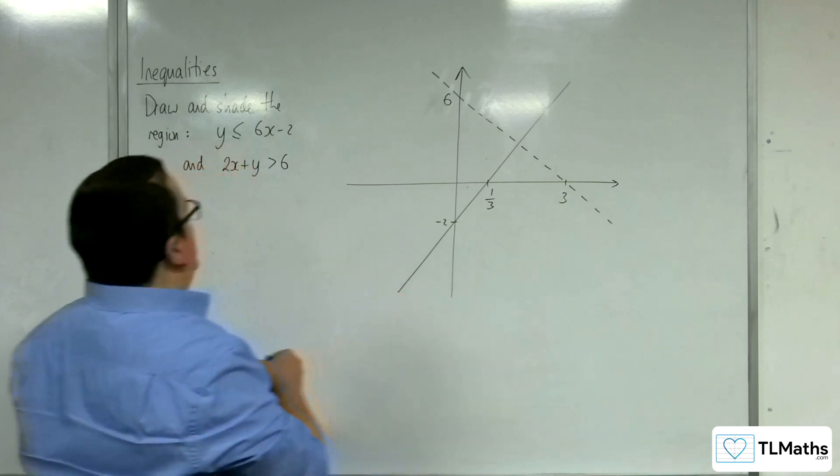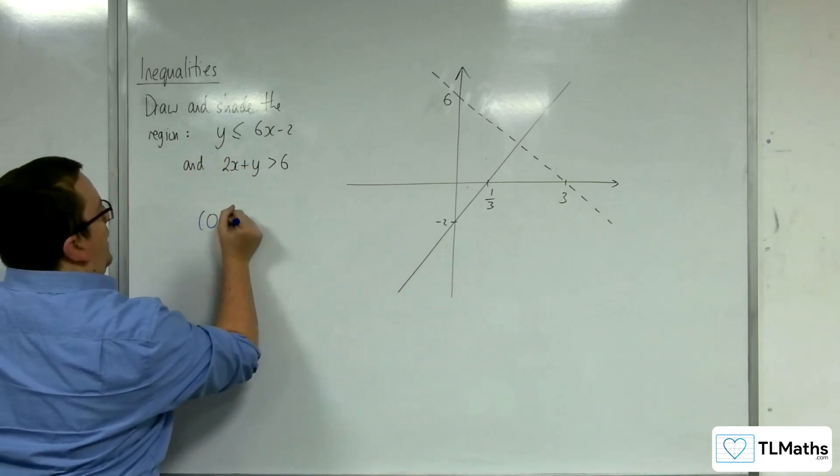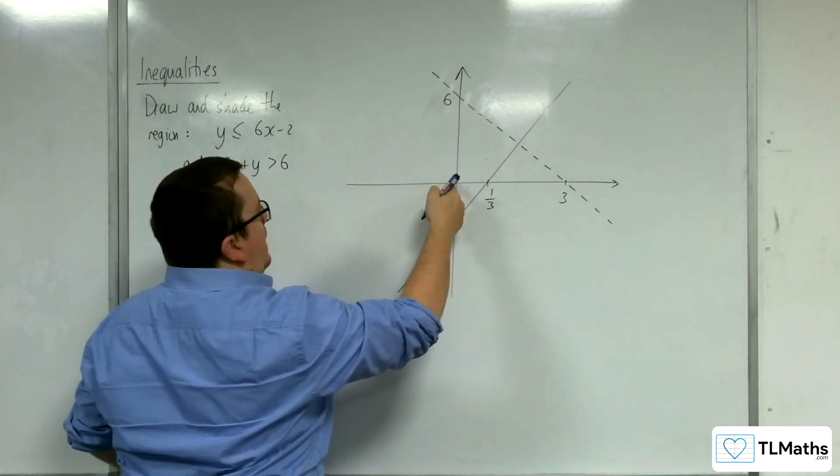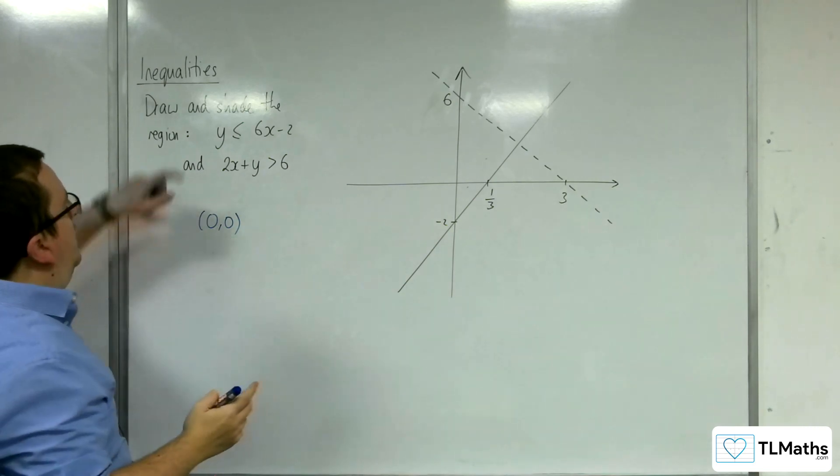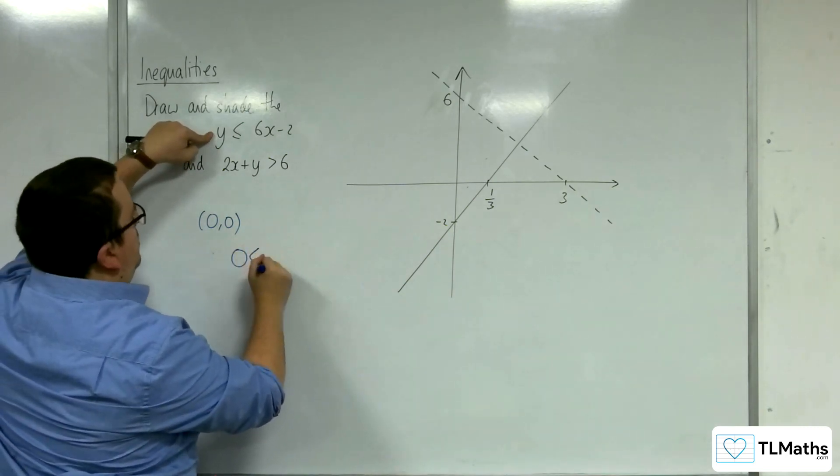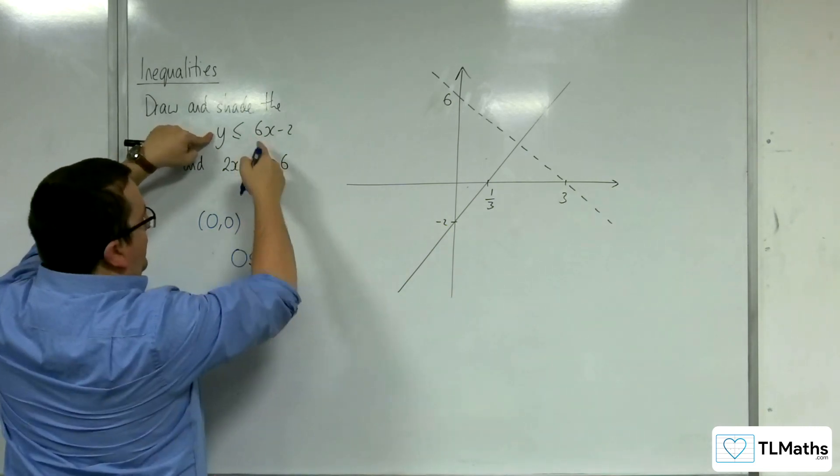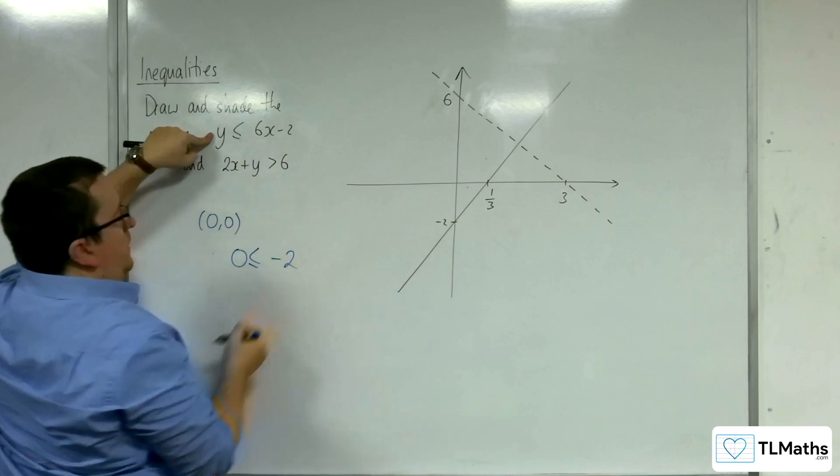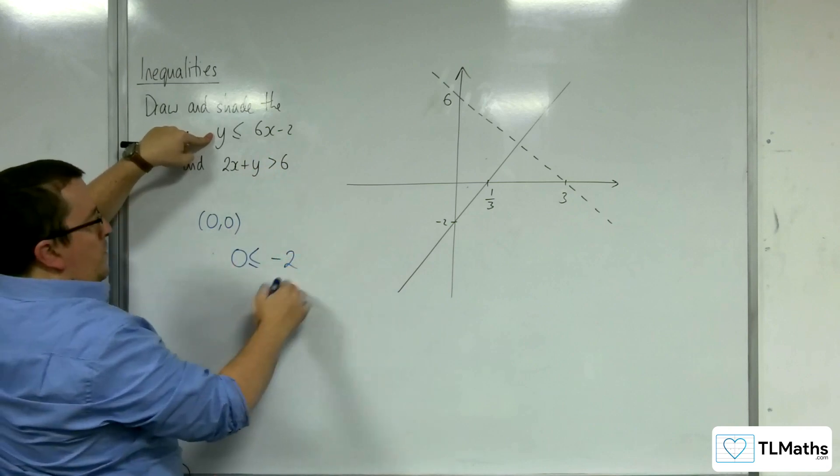Okay, so I'm going to choose (0, 0), and I'm going to check that point there on both of the lines. So for the first one, we get 0 is less than or equal to 6 lots of 0, take away 2. So is that true? No.